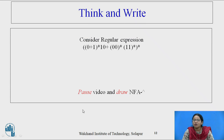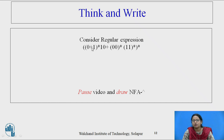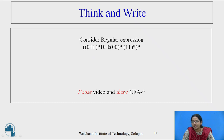Please pause the video and try to draw the diagram for this regular expression part by part — first 0+1, then (0+1)*, then 10, then 00* concatenated with 11*, both united and then Kleene star.